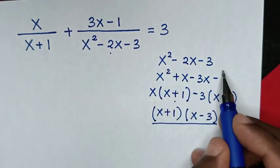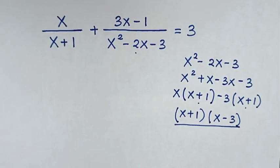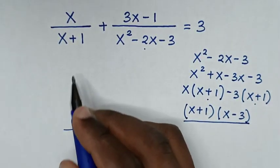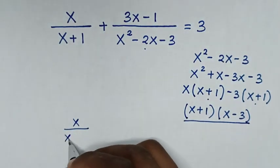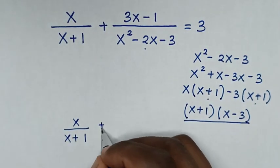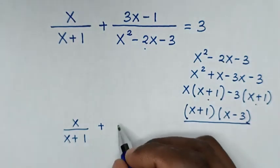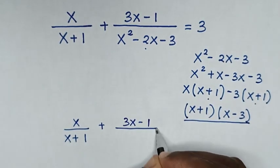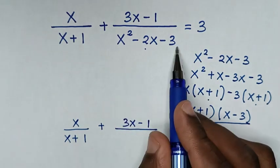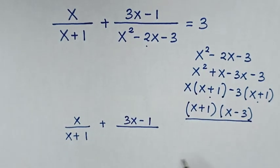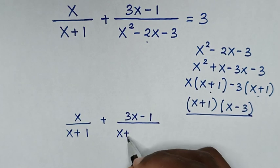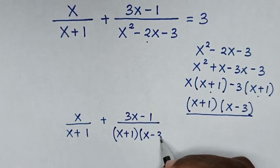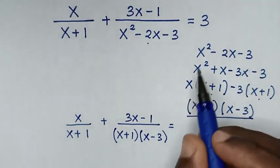From our problem, it will be x over (x plus 1), then plus the numerator (3x minus 1) over the factored denominator, which is (x plus 1)(x minus 3), and this is equal to 3.